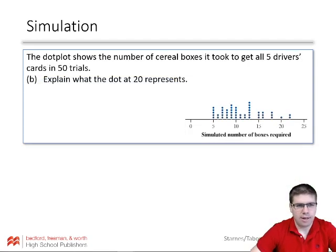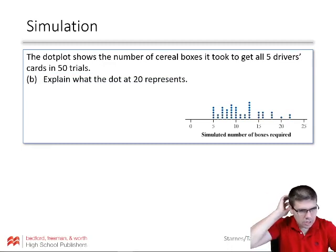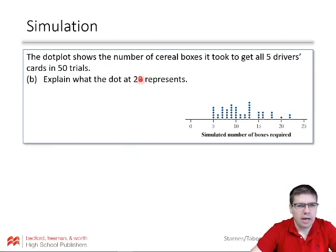So they did that 50 times. And each of the times, we've got dots here. This is how many trials it took them to get all five drivers. So sometimes it took them five and six and so on. So explain what the dot at 20 represents. There's a dot here.